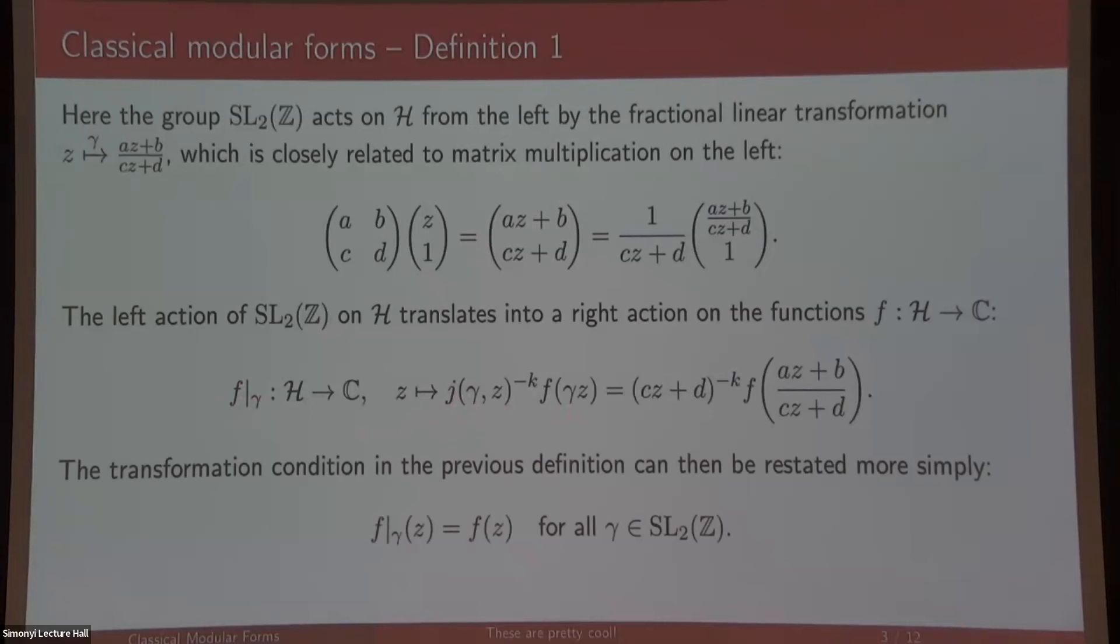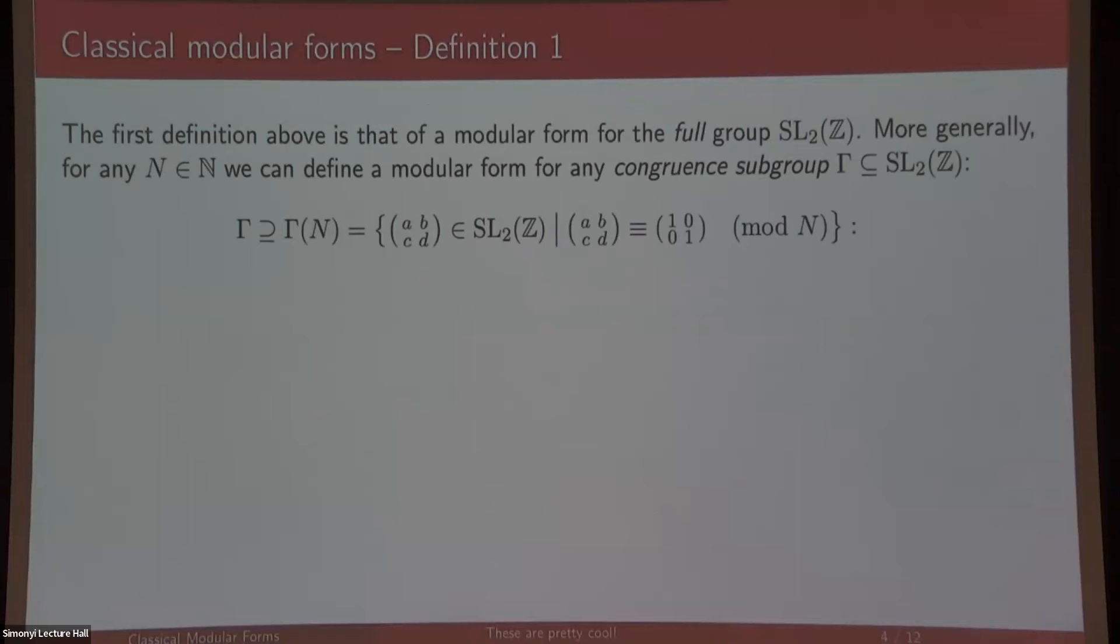You can also define modular forms for any congruence subgroup, which is any subgroup of a principal congruence subgroup. Those are matrices which are congruent to 1 mod some integer, so you can have matrices which are 1 mod 5, for instance. A modular form for that subgroup can be defined similarly to before.